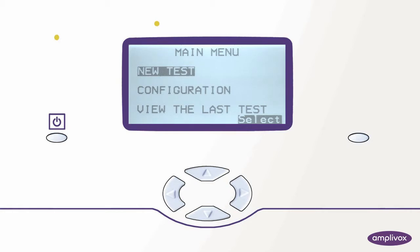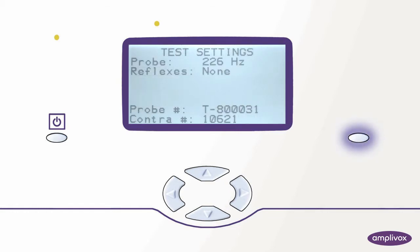First we need to review our current profile settings which is easily done by pressing either the button on the probe or the display mode button on the 302 unit. We can now see that our current tympanometry probe tone is set to 226 Hertz and no reflexes are activated.